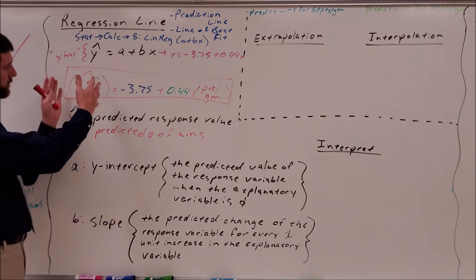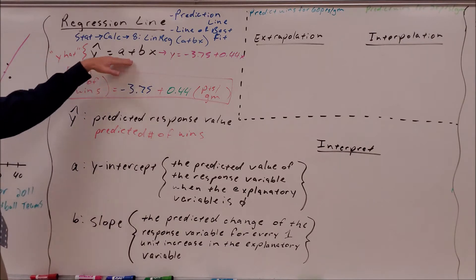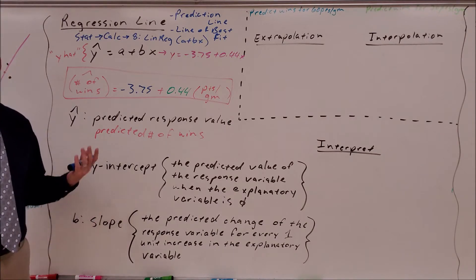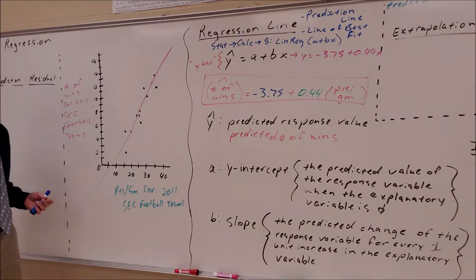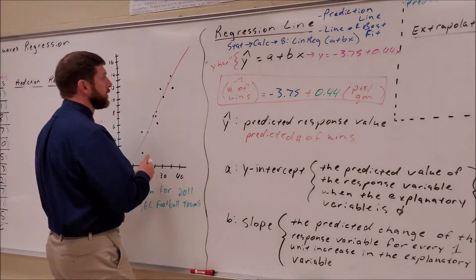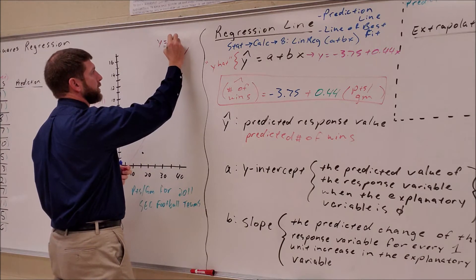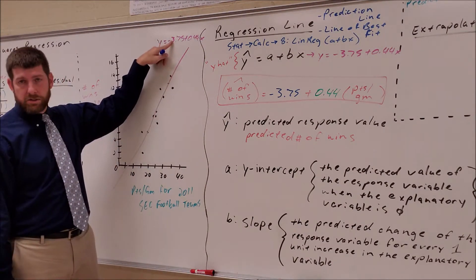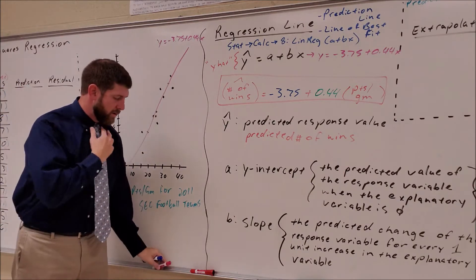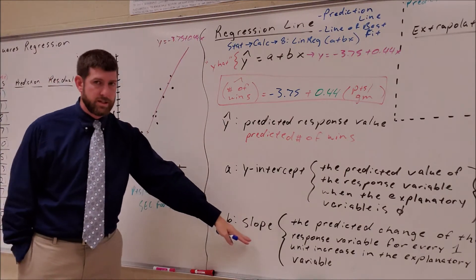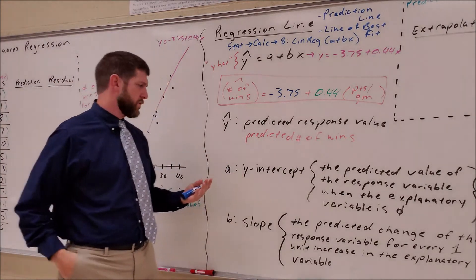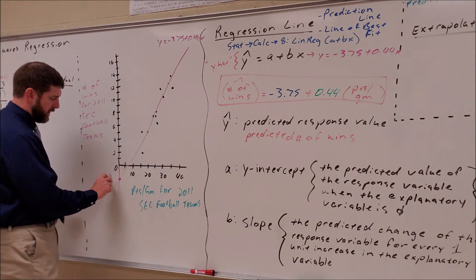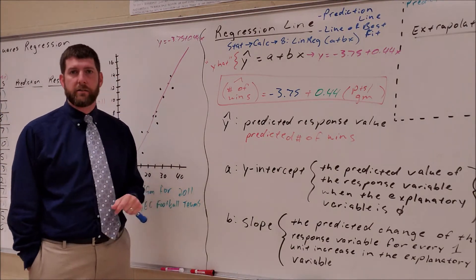Now let's talk about what A and B represent. A is the y-intercept — this is a straight line, so we have two components: the constant (y-intercept) and the slope (coefficient of X). Graphically, the y-intercept is where we cross the y-axis, which would be at negative 3.75 here. In terms of interpretation, it's the predicted value of the response when the explanatory variable is zero — so when points per game equals zero.